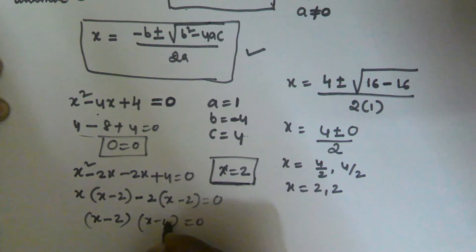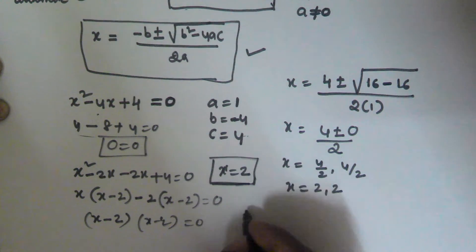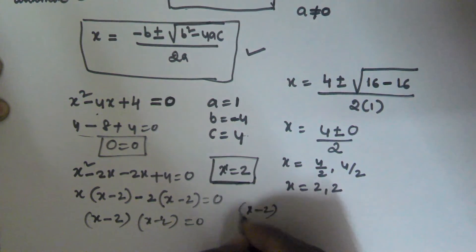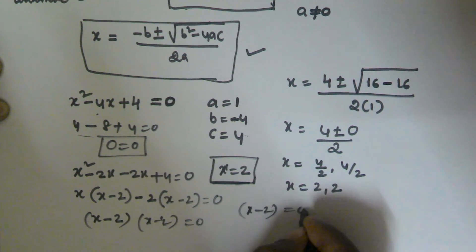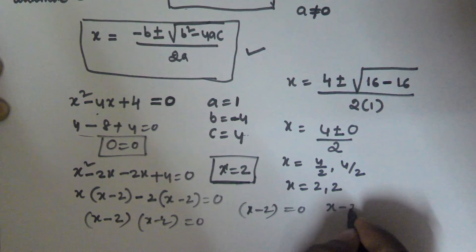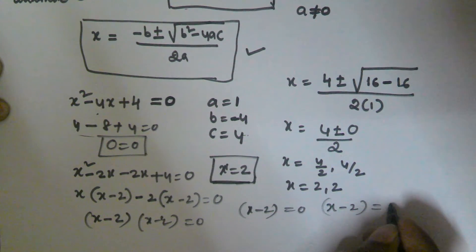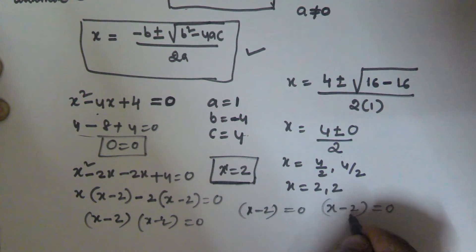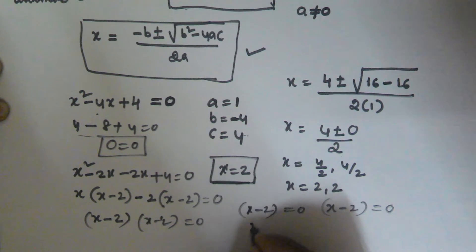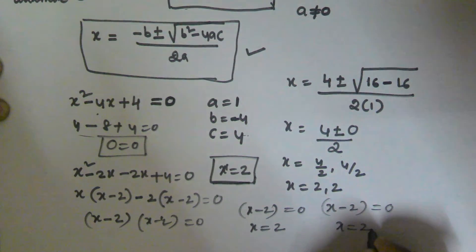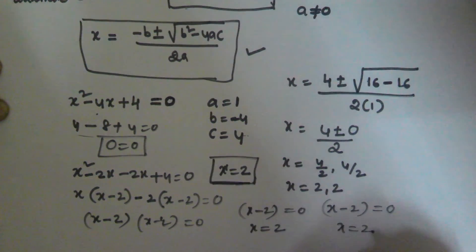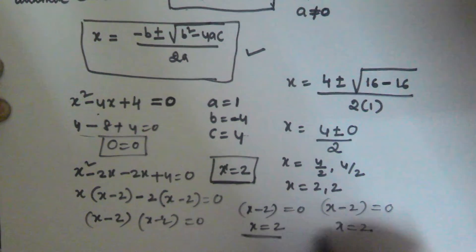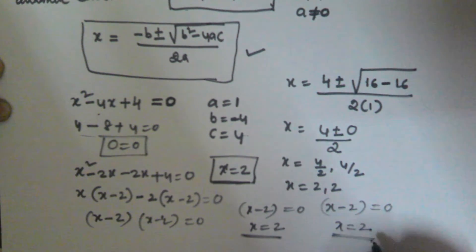This gives (x − 2)(x − 2) = 0, so x − 2 = 0 in both cases, meaning x = 2. In both cases x equals 2, which is the root of the given equation.